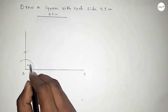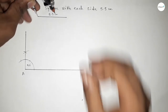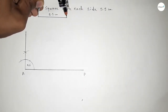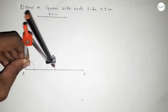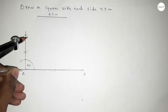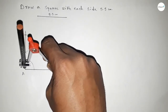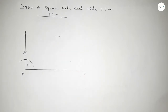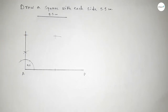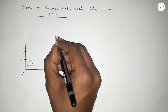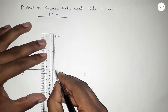Now taking the length 5.5 centimeters by compass, putting the compass here and cutting here, and cutting here with the same length. Both curves intersect at a point. Now joining this side and joining this side.